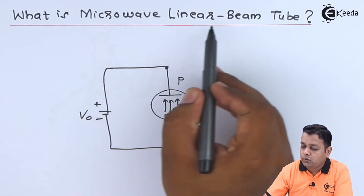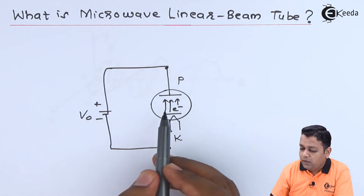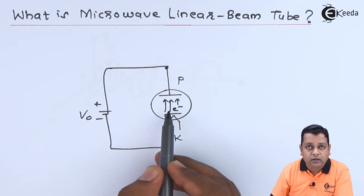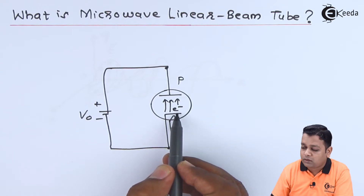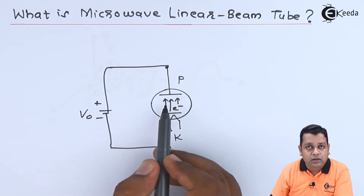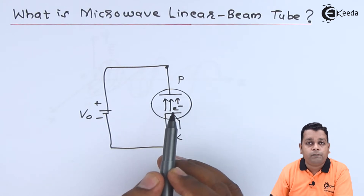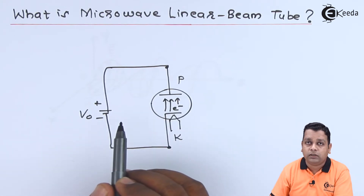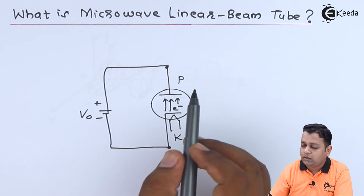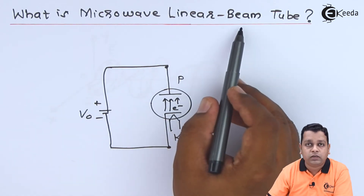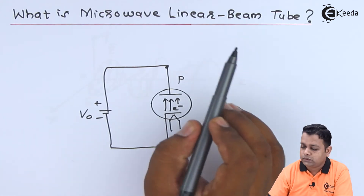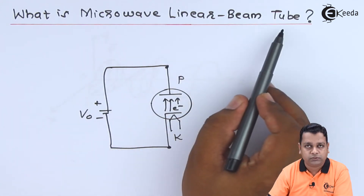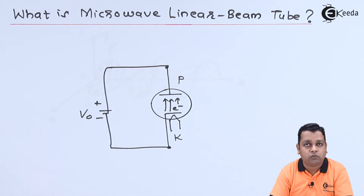Coming back to the title: in microwave linear beam tubes, when the microwave interacts with the electron beam traveling from cathode to plate or anode, if the plane of the magnetic field is linear — or in the same plane as the electron beam — we categorize all such microwave tubes as linear beam tubes. This is the introduction to what microwave linear beam tubes are.